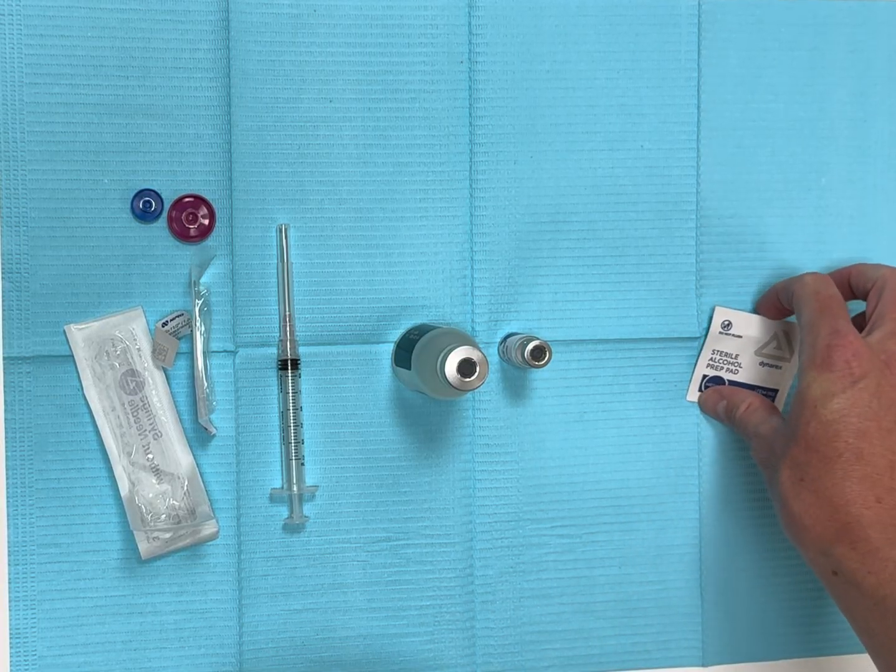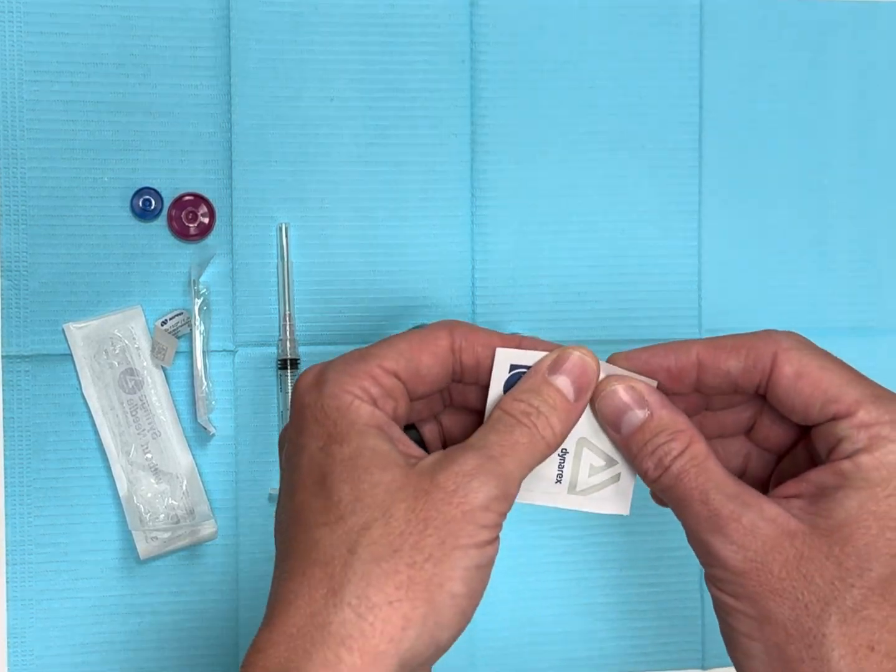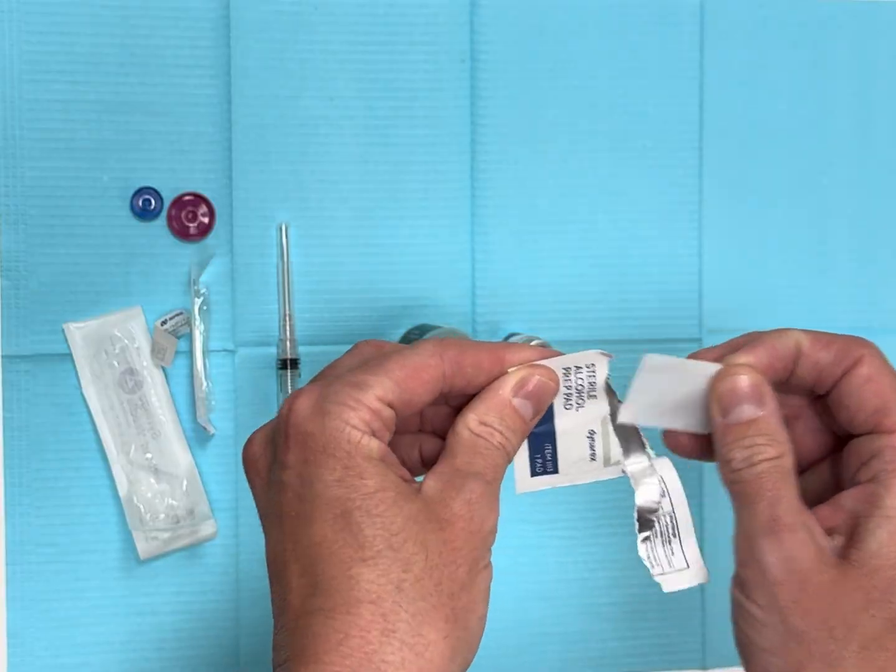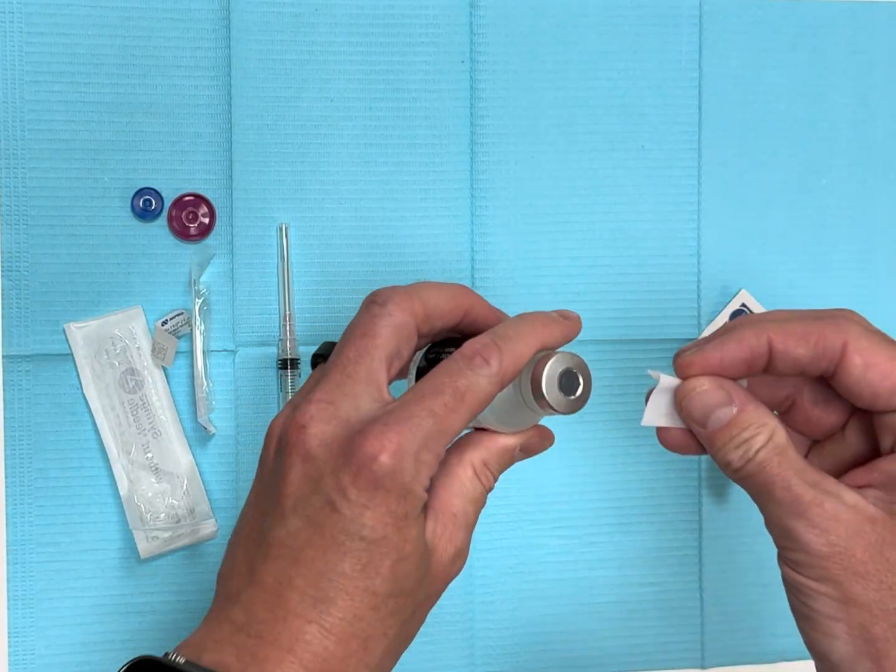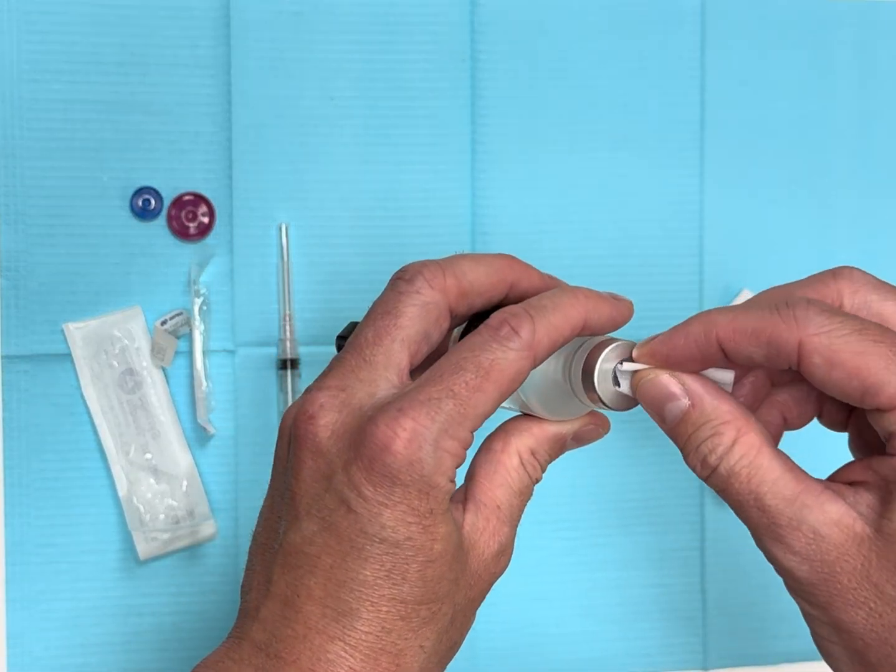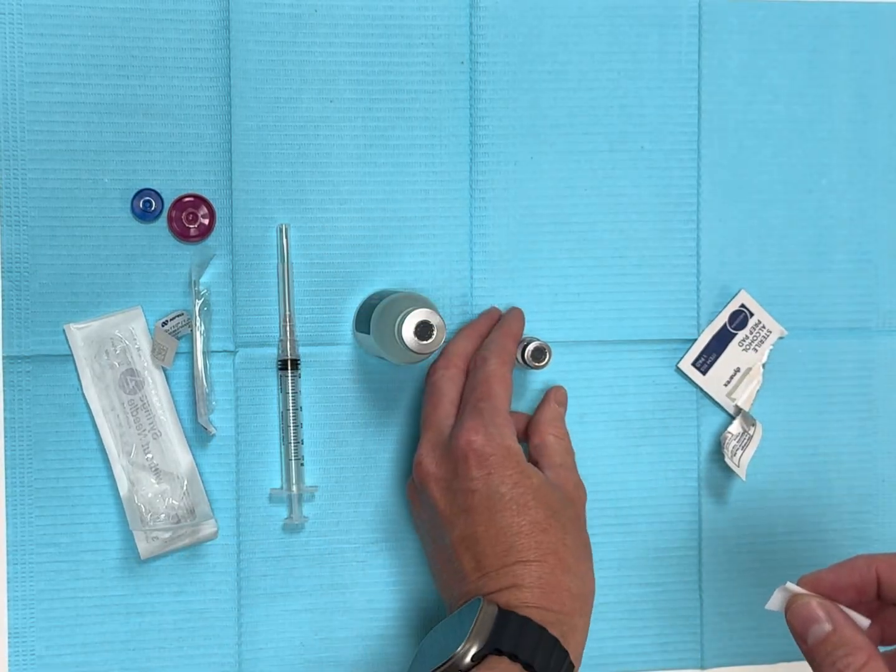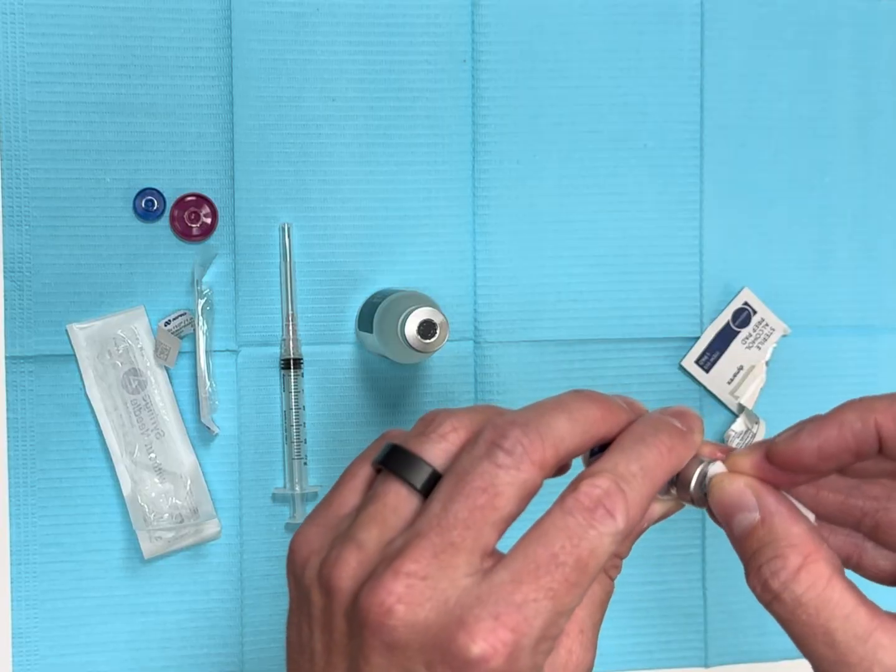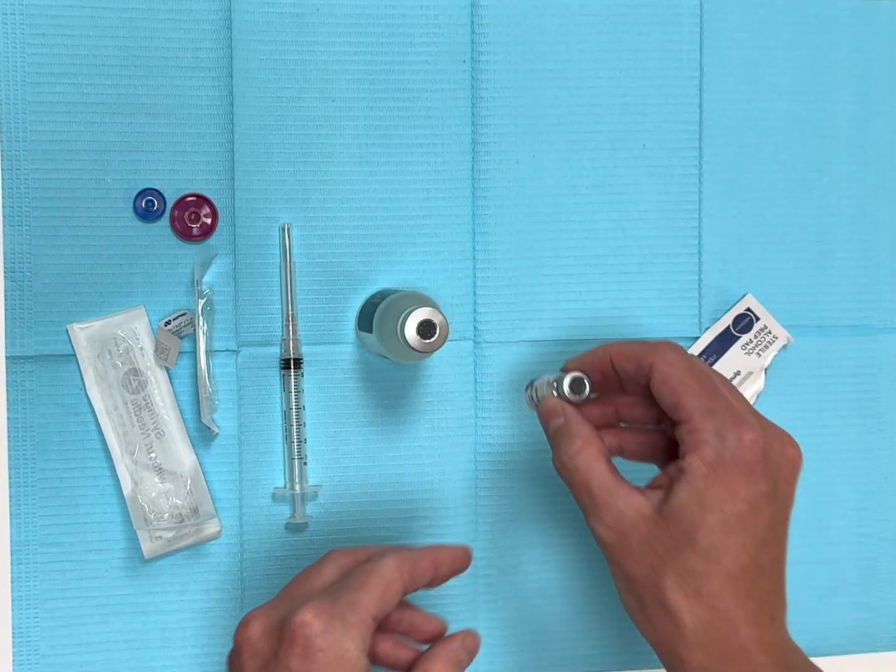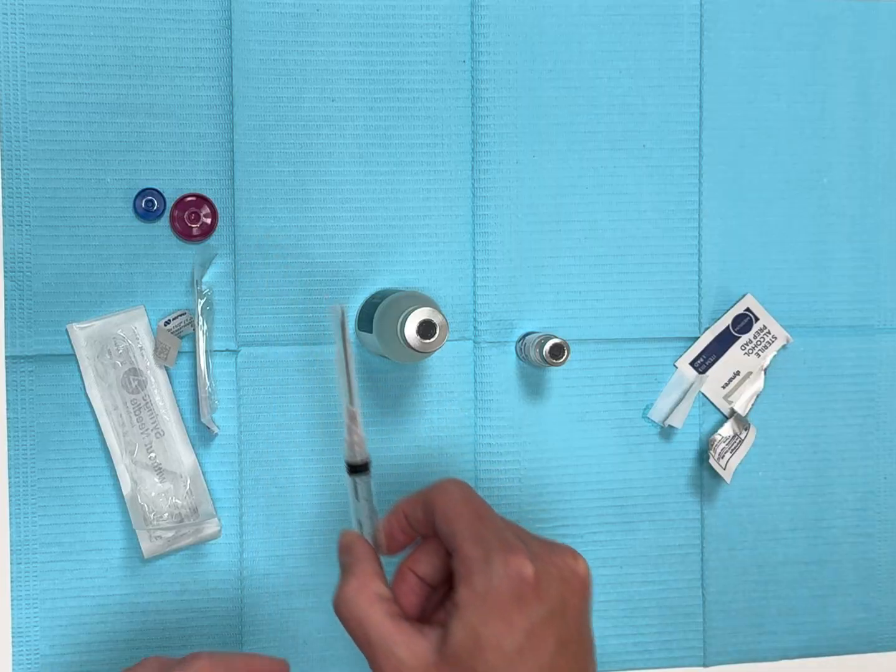Next you'll take the alcohol swab and this you want to just make sure that this gray rubber piece in the middle of the metal is nice and sterile. After you've done that,